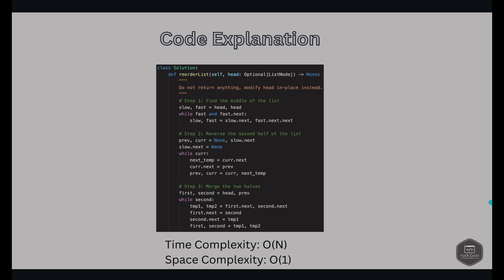Complexity analysis: the time complexity is O(n), where n is the number of nodes in the linked list. We traverse the list multiple times, but each operation — finding the middle, reversing, and merging — is linear. The space complexity is O(1), since we use only constant extra space and don't allocate any variable that scales with the input size.